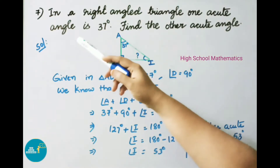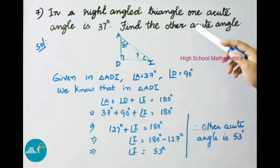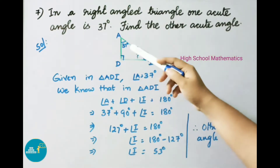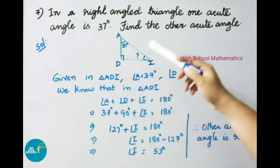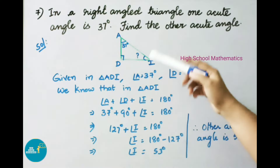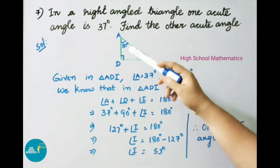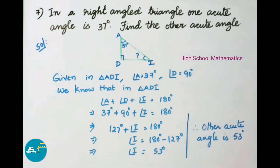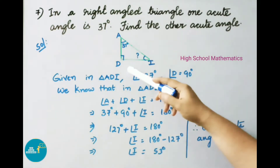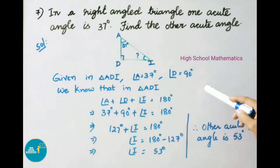Question number 7: In a right-angled triangle, one acute angle is 37 degrees. Find the other acute angle. Given in triangle ADI: angle A equals 37 degrees, and angle D is the right angle, that is 90 degrees.